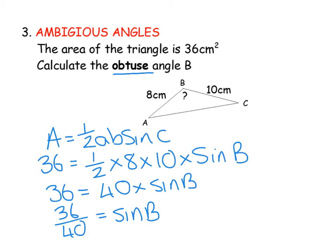And at that point to get B, you then do inverse sine of 36 over 40. Remember to type that into your calculator, you can either use your fraction button or you can do bracket 36 divided by 40. And it gives us an answer of 64 degrees.